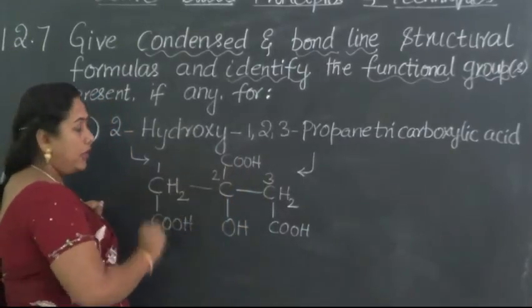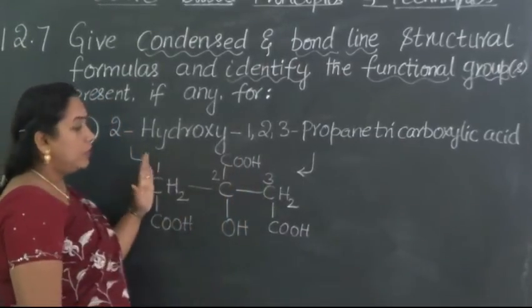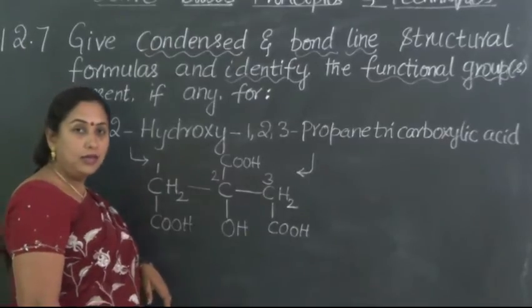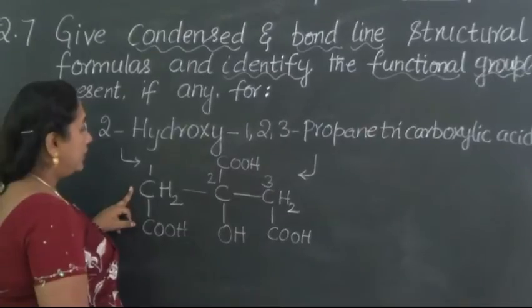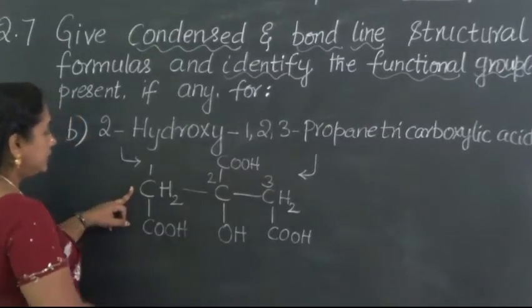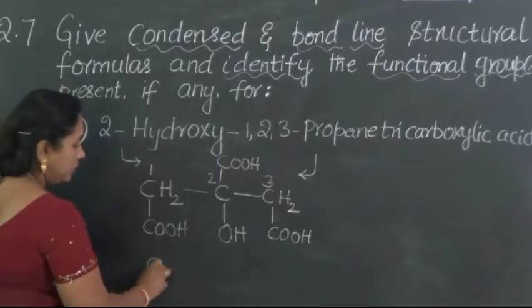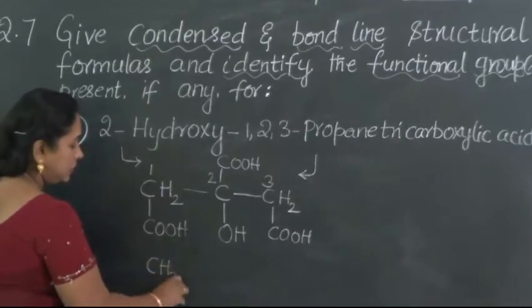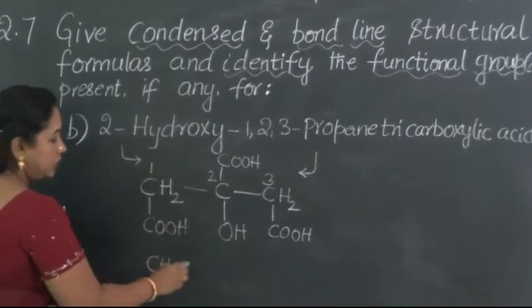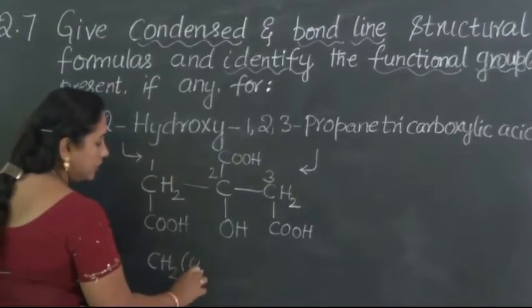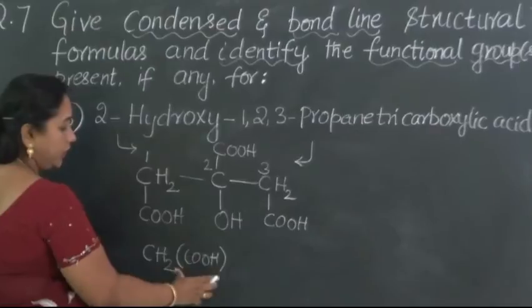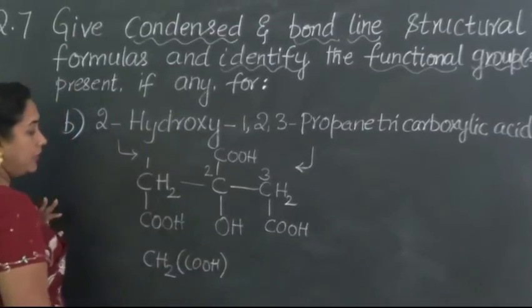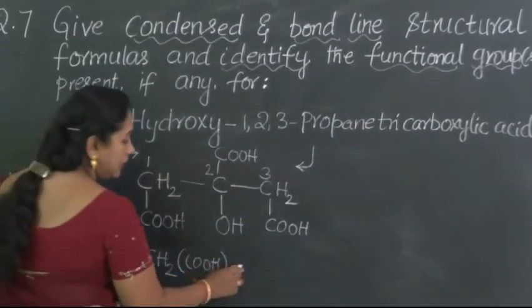This is the complete formula. Now, keeping this in mind, let us write the condensed formula of this. There is a CH2, so let us write CH2. CH2 is attached with COOH. Because it is in the branched chain, we need to write COOH in parenthesis, that is inside the bracket.